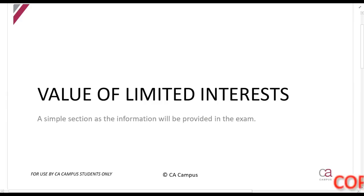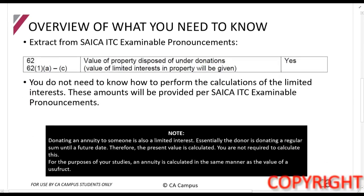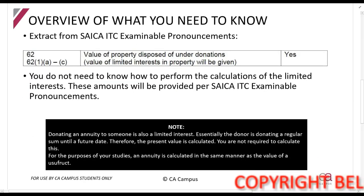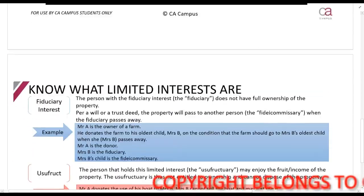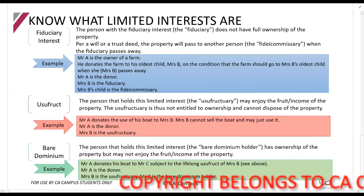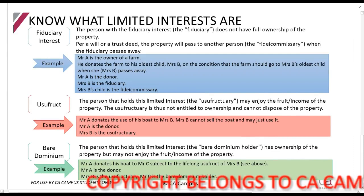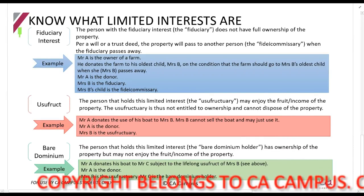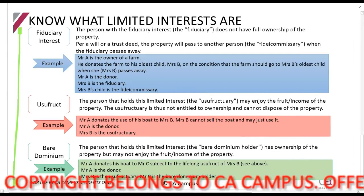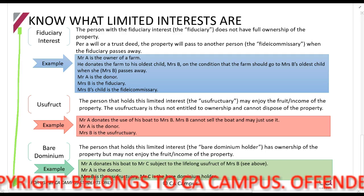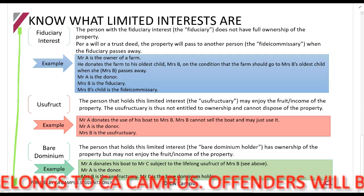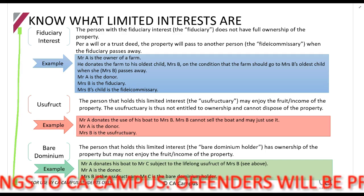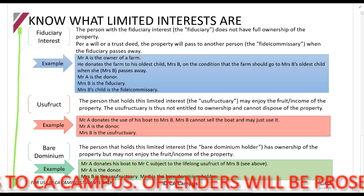The last bit I'm going to briefly talk about is the value of limited interests. As I mentioned before in your soccer ITC example, pronouncements tell you that the value of limited interest in property will be given. I've also given you this in your comprehensive lecture example. Here's a slide you can work through — it basically explains the difference between a fiduciary interest, usufruct, and bare dominium. You won't be asked to discuss this; you might just be asked to use it, and you'll see how from the question.